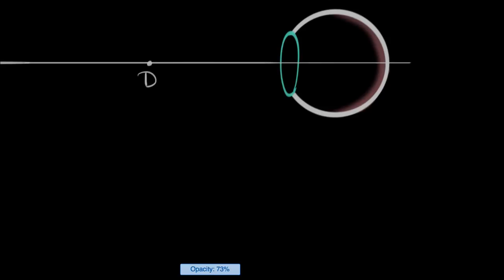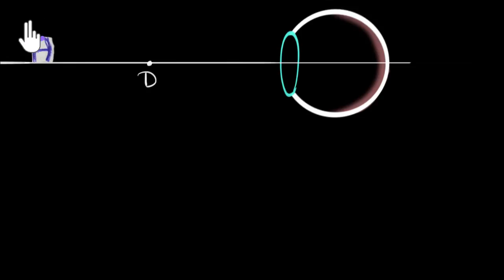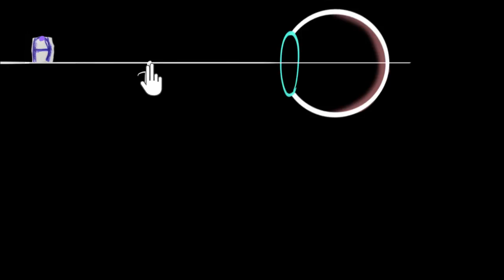Let's look at this in a little bit more detail. Imagine we have our eye and a principal axis drawn — we're going to consider our eye as just a convex lens, and this is the retina where the image is supposed to be formed. Now let's put an object, the letter A, at some distance from the eye. Point D is the near point, which means if the object comes closer than the near point, we will not get a sharp image.